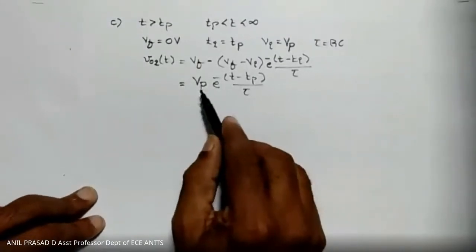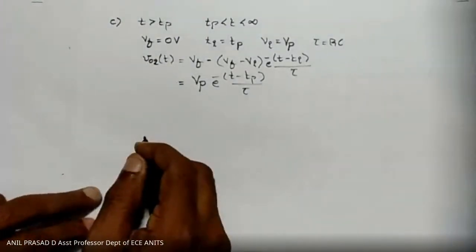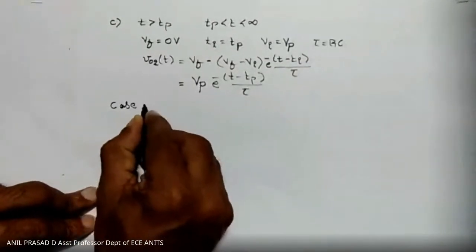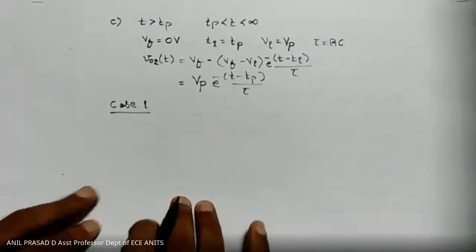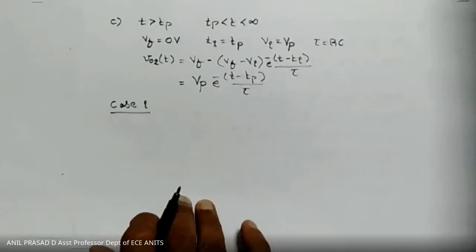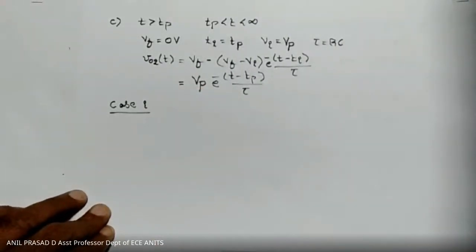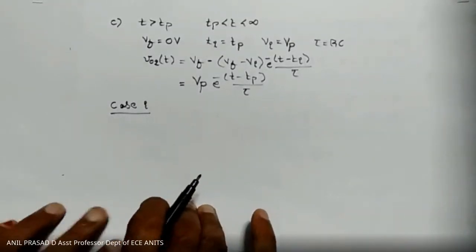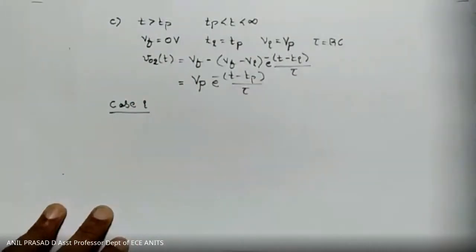So V_out2(t) = VP·e^(−(t−tp)/τ), where tp here stands for tp plus. We have used only one equation throughout: V_out(t) = Vf − (Vf − Vi)·e^(−(t−Ti)/τ). The key is always identifying Vf, Ti, Vi, and tau for each interval.